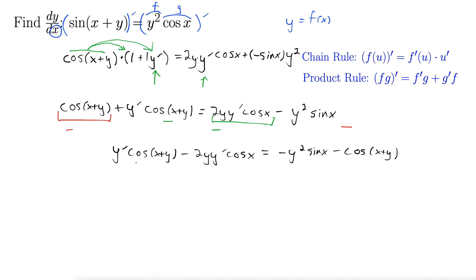All right so all I did there was a little bit of algebra to get the y primes on one side everything else on the other. Now the crucial step we factor out the y prime. And that's always going to happen with these kinds of implicit differentiation examples. So the y prime comes out to the front and we're left with cos of x plus y minus 2y cos x equals and the right side stays the same.